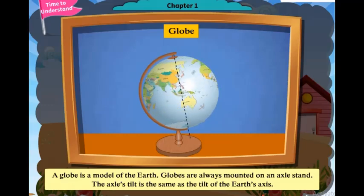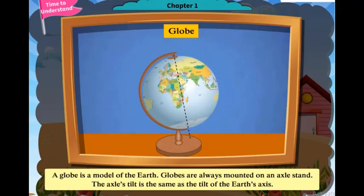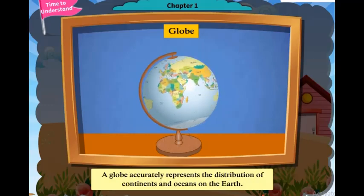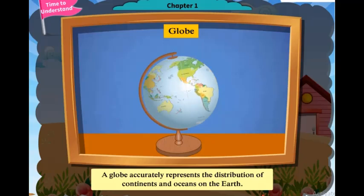The axle's tilt is the same as the tilt of the Earth's axis. A globe accurately represents the distribution of continents and oceans on the Earth.